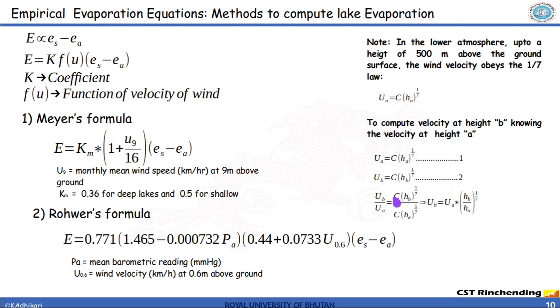If you divide equation number 2 by equation number 1, the coefficient will get cancelled and the remaining terms, in terms of velocity at b, we are going to get the velocity at a height b which is equal to velocity at height a times height b divided by height a raised to power 1 by 7.